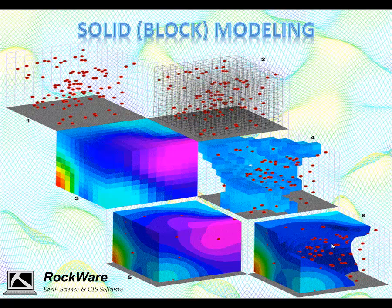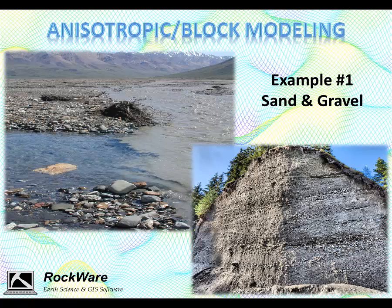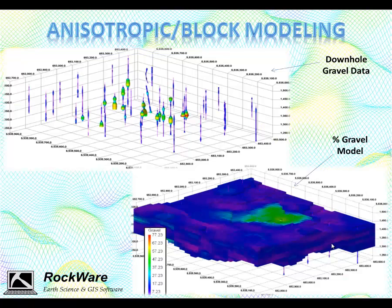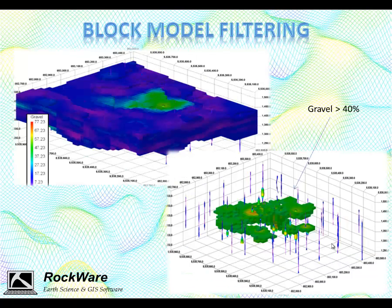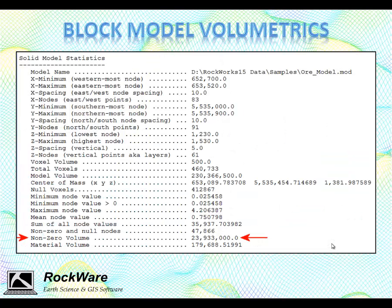To create a block model, we start with randomly distributed control points, then superimpose a three-dimensional grid matrix and estimate the values for each cell based on the surrounding control points. Block modeling is well-suited for sand and gravel deposits because they are typically highly variable both vertically and horizontally. Block modeling in RockWorks is most commonly based on downhole data. In this example, we have interpolated a block model representing gravel percentages based on downhole gravel observations. The next step is to apply a filter so that voxels falling below a cutoff level are removed from the model, and the remaining voxels are counted and multiplied by the dimensions of each voxel, resulting in a final volumetric number.